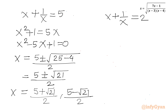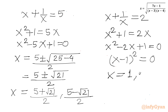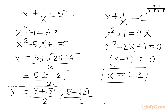For the second equation, x plus 1 over x equals 2: multiplying by x gives x squared minus 2x plus 1 equals 0. This is a perfect square: (x minus 1) squared equals 0, so x equals 1 with multiplicity 2. The conclusion is we again have a solution of x equals 1.